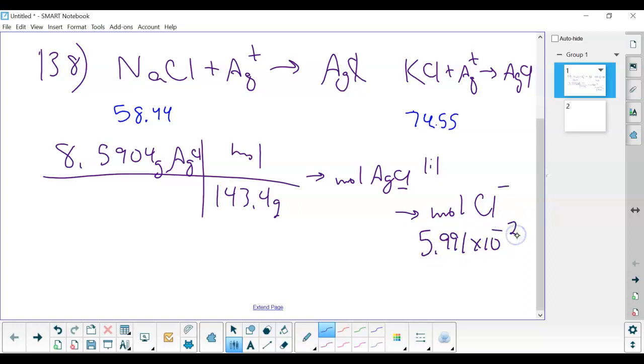What else do we know? Well, we know that if we label sodium chloride as compound x and we label potassium chloride as compound y, that x + y in grams equals 4.0000.